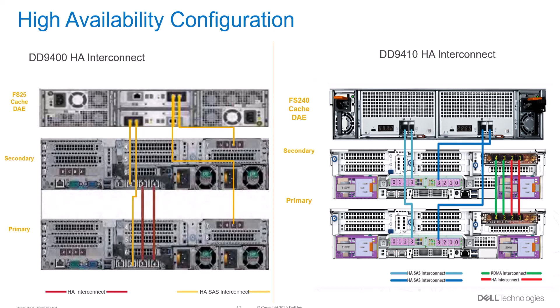In the case of HA sync, remote direct memory access is the remote memory management capability that allows server-to-server data movement directly between application memory without CPU involvement, which leads to a faster sync process.